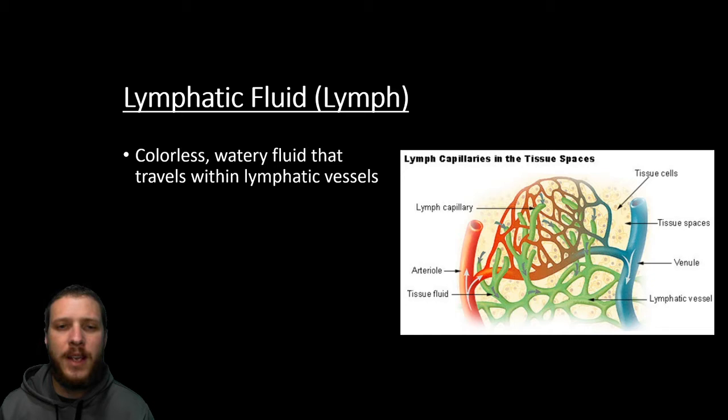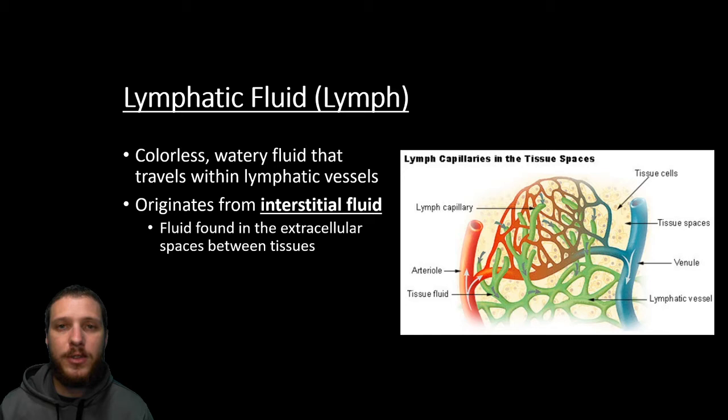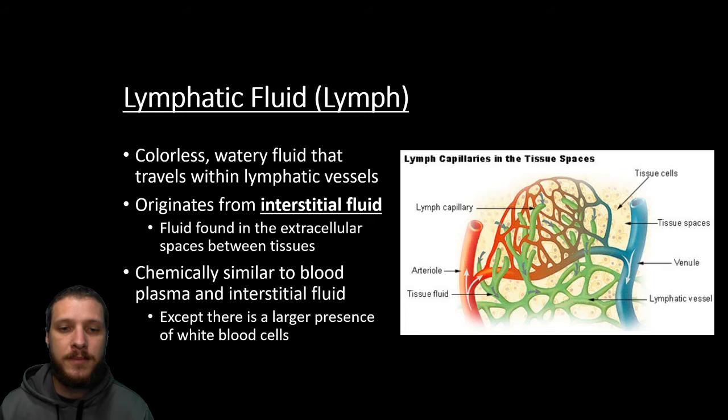Lymphatic fluid is a colorless, watery fluid that exists within the lymphatic vessels, very similar to plasma or interstitial fluid — they just have different names depending on where we find them in the body. It originates in the interstitial fluid, also known as extracellular fluid — just the spaces between all the cells. It's chemically similar to blood plasma and extracellular fluid, but there's a larger presence of white blood cells or immune cells within the lymphatic vessels.